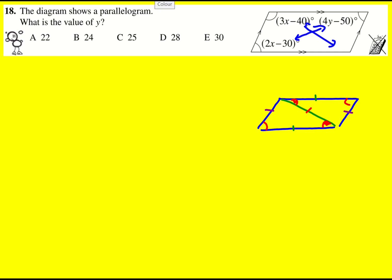Second fact is that actually these two add up to 180. So I can write down that 3x minus 40 plus 2x minus 30 is equal to 180.